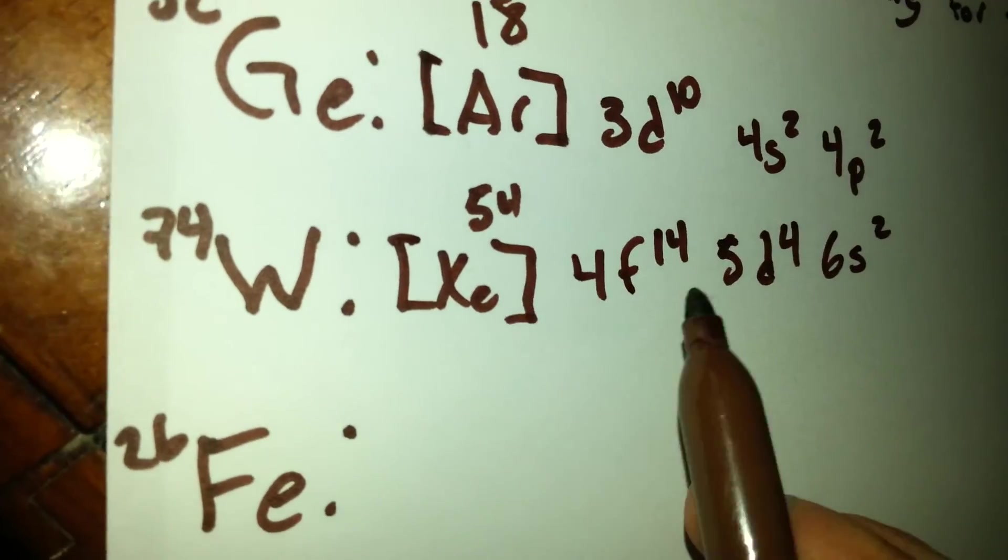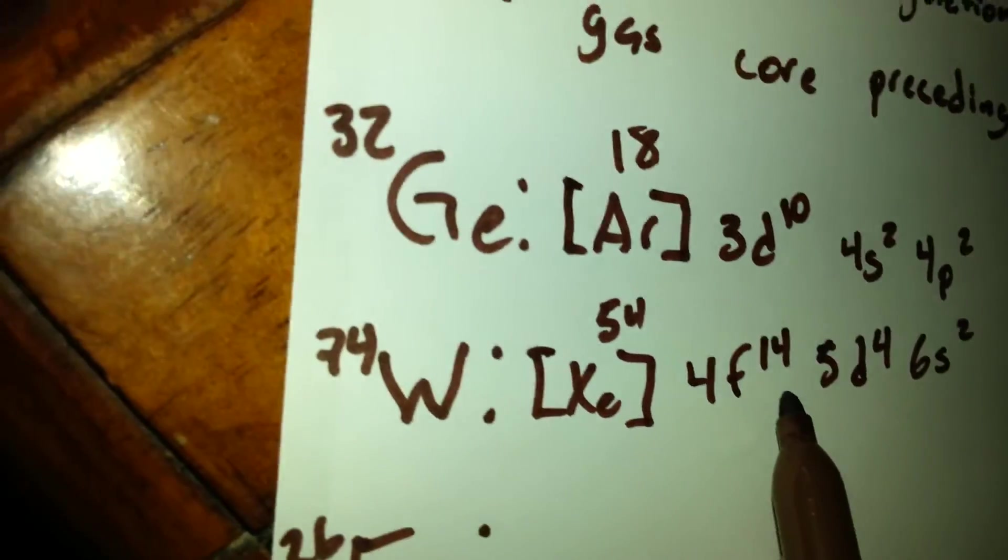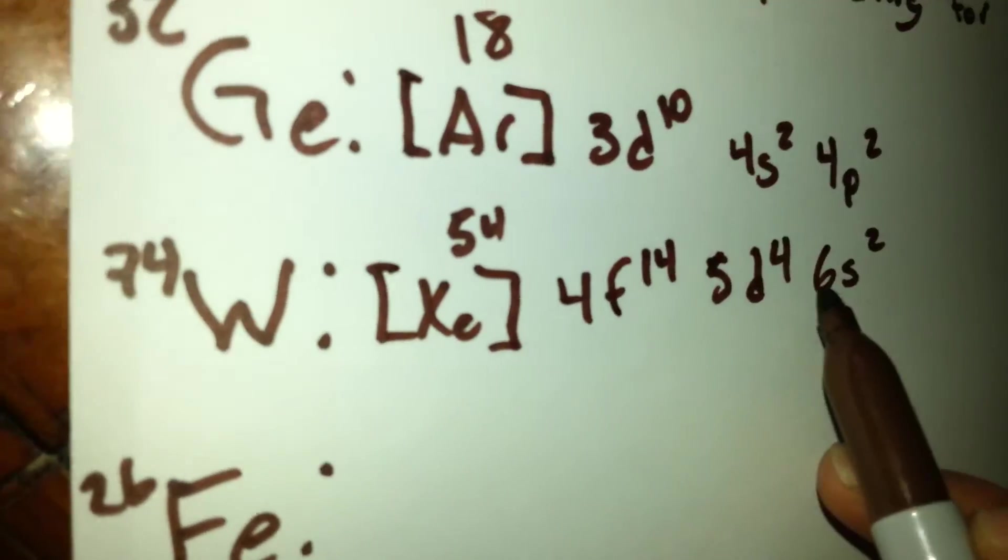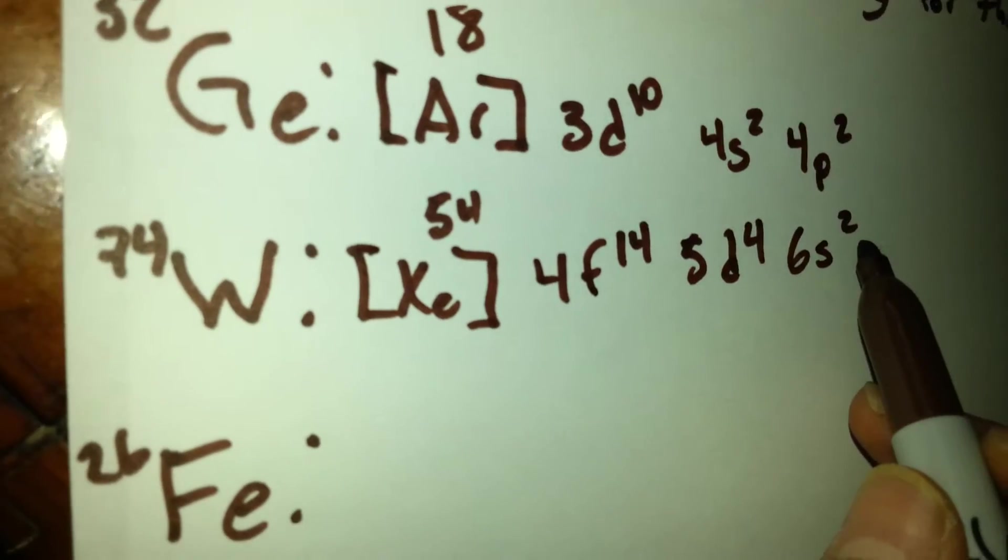We get 54, plus 14 is 68, plus 4 is 72, plus 2 is 74.